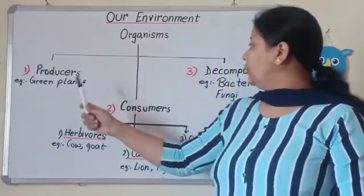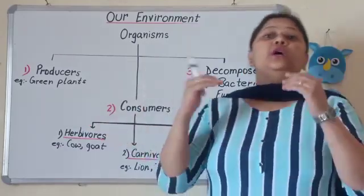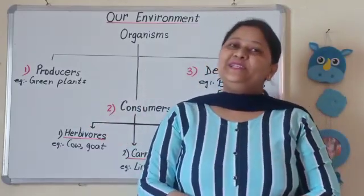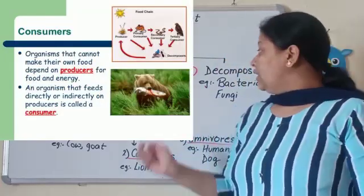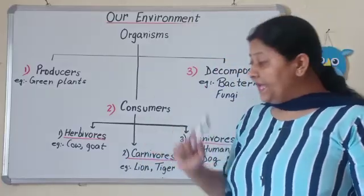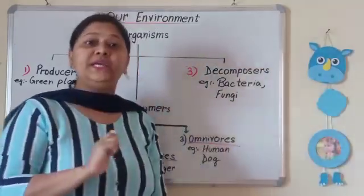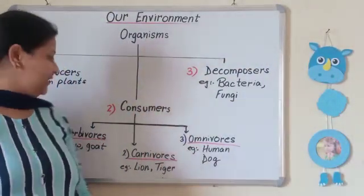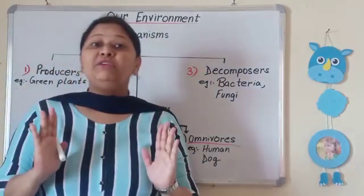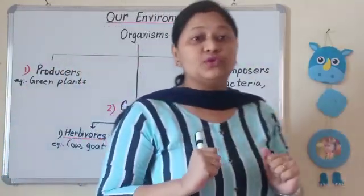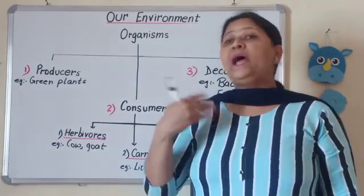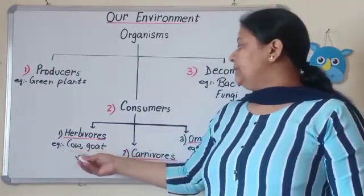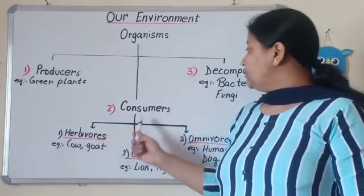Now consumers, who directly or indirectly depend upon producers for their food. These consumers are again classified into three. The first one is herbivores. What are herbivores? Animals that eat plants. Plant-eating animals, example: cow, goat.